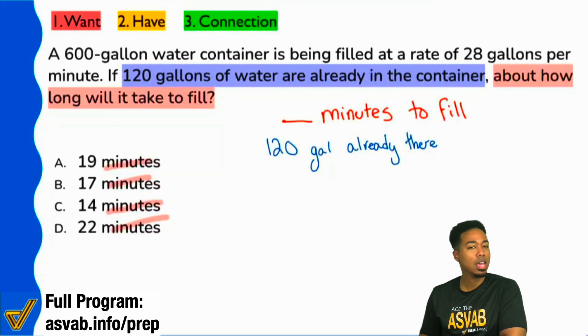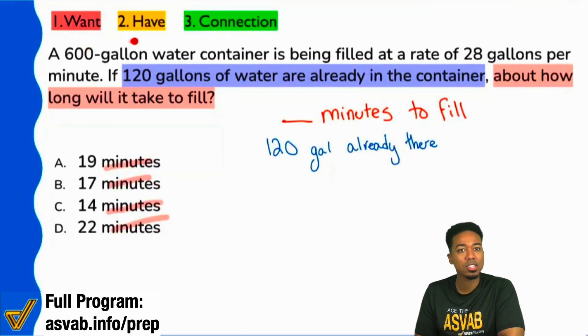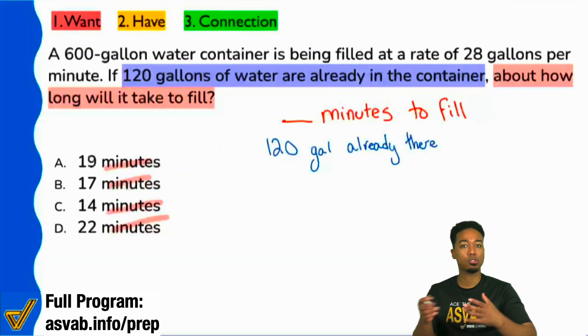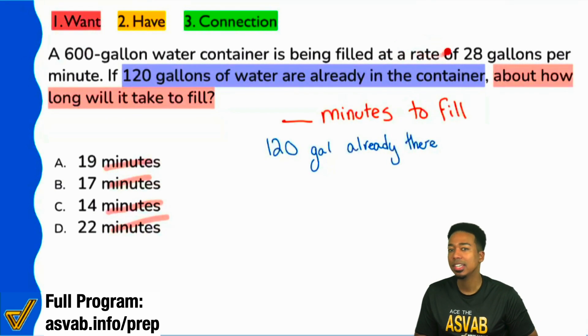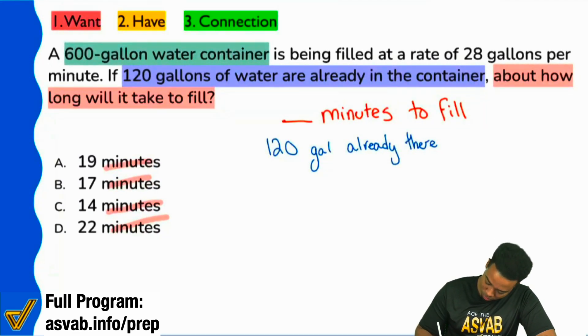Now next up, we see that it says, a 600 gallon water container is being filled at a rate of 28 gallons per minute. So ignoring the numbers, let's just go ahead and tackle the ideas, the context. So it says, a 600 gallon water container - that's how much you can hold, and here's a rate that it is being filled up at. Let's just write the information down and then we'll talk about it in a moment.